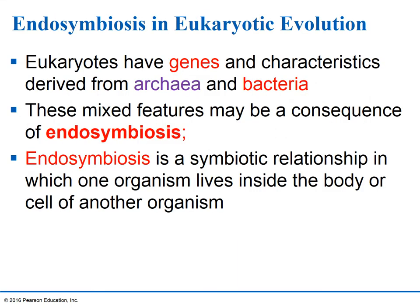The theory behind how eukaryotic cells evolved is called the endosymbiotic theory. One of the things we've found out about eukaryotic organisms is that they have genes or sequences of DNA from two different major groups of prokaryotes. Thinking back to the three domains — bacteria and archaea are the two prokaryotic domains, and eukarya has all eukaryotic organisms. When we look at gene sequences in eukaryotic organisms, we find we're really a combination of genes from both prokaryotic groups: archaea and bacteria.